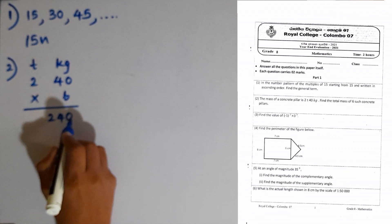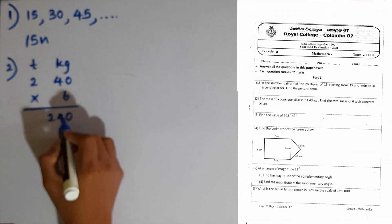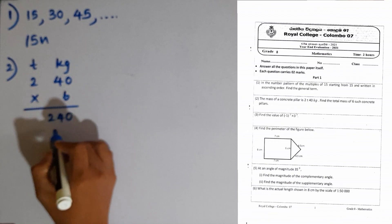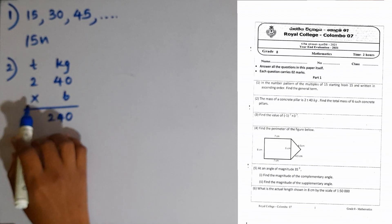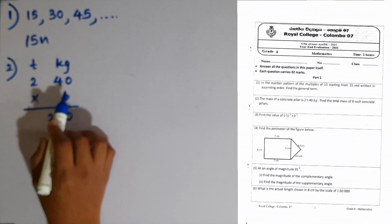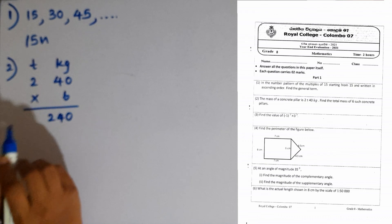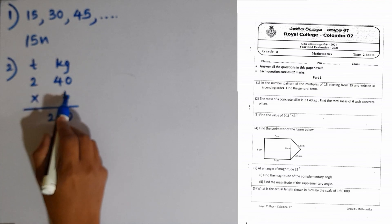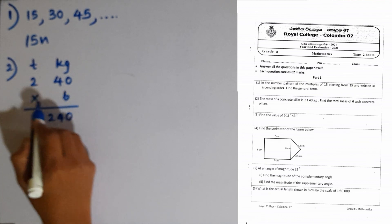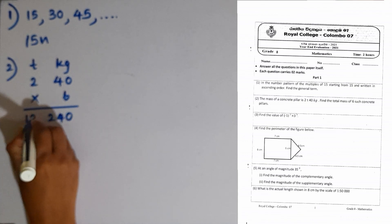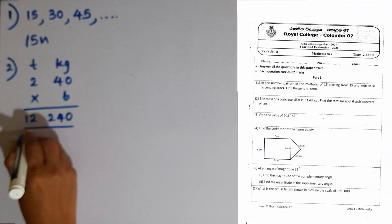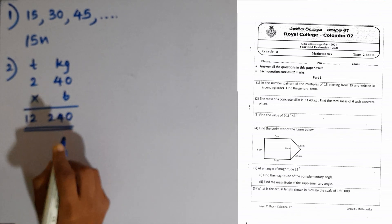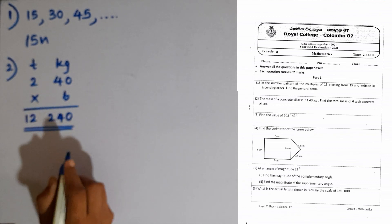The maximum amount that we can keep in the kilograms column is 999, as 1 ton equals 1000 kg. 6 times 2 is 12, so the answer is 12 tons 240 kg.